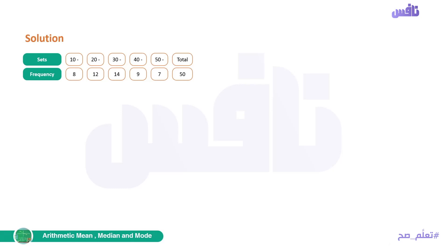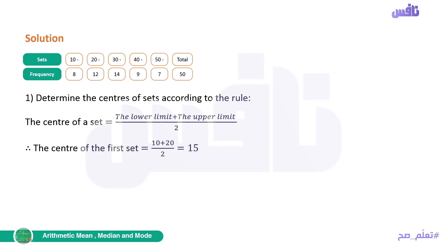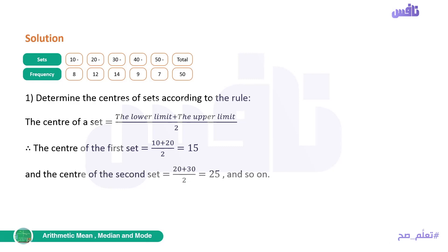Step one in the solution: determine the centers of sets according to the rule. The center of the set equals (lower limit + upper limit) / 2. For example, the set from 10 to less than 20: the lower limit is 10 and the upper limit is 20. Center = (10 + 20) / 2 = 15. For the second set from 20 to less than 30: center = (20 + 30) / 2 = 25. We continue with the same method for the remaining sets — 30+40 over 2, and so on.